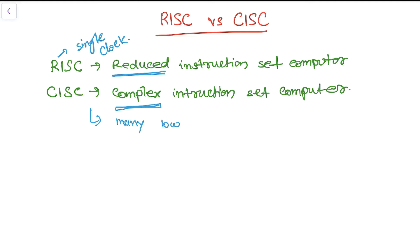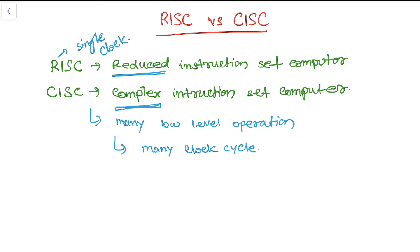In a CISC type of instruction set computer, a single instruction can perform numerous low-level operations, which means many clock cycles are required. These are the few major differences between RISC and CISC. RISC architecture uses a single clock cycle and every instruction operates for one low-level single operation, but in a Complex Instruction Set Computer it is divided into many parts to execute those levels.